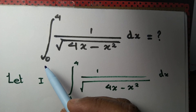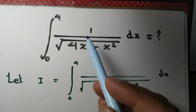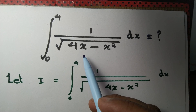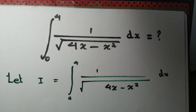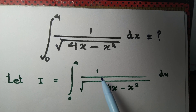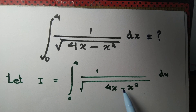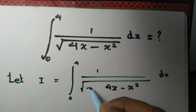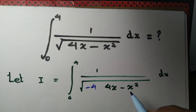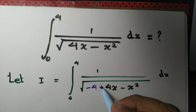Evaluate the integral from 0 to 4 of 1 over root(4x minus x squared) dx. Let I equal the integral from 0 to 4 of 1 over root(4x minus x squared) dx. Let's add and subtract 4 to the expression inside the square root.